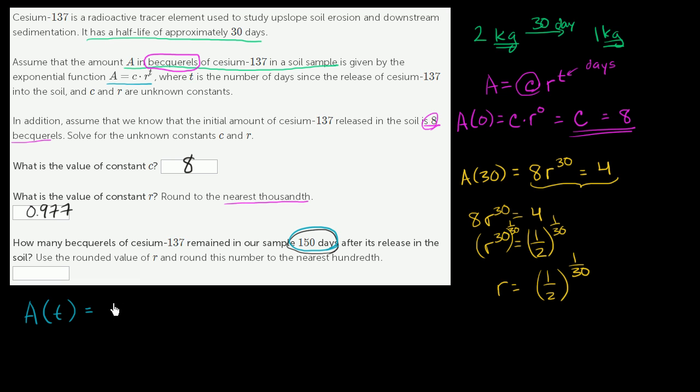We know that the amount of cesium-137 in becquerels as a function of time in days is going to be equal to 8 times 0.977 to the t power, where t is the number of days that have passed. They're essentially saying, how much do we have left after 150 days? So they want us to calculate A of 150.